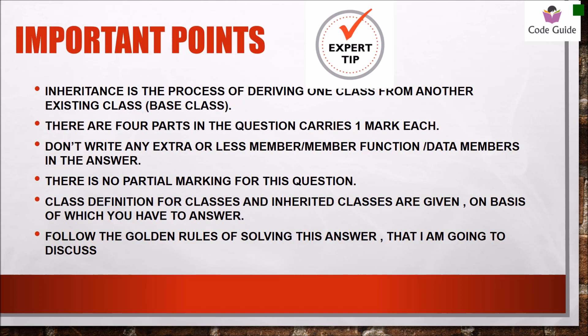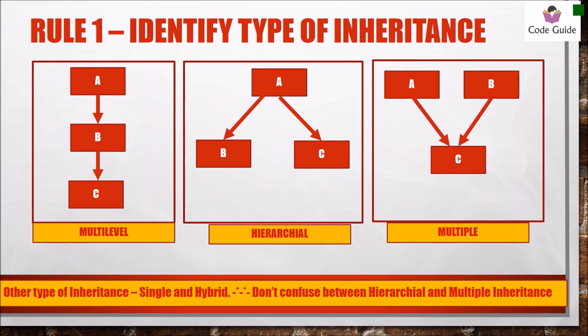Rule number one is to identify the type of inheritance. See these three pictures — the first one is multi-level inheritance where there are more than one level of inheritance depicted. The second is hierarchical inheritance where there is one base class but more than one derived class.